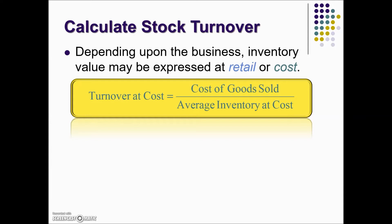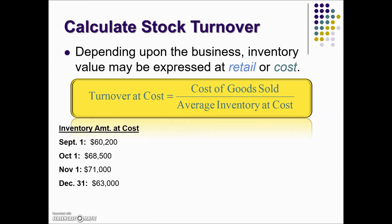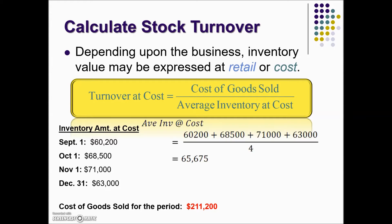So instead of looking at retail prices, we're looking at cost prices. Here we have four different dates where they determine the inventory on hand using the cost of the inventory. We're also given the cost of goods sold for the period — not the selling price, but the cost of the goods that were sold. Before we can find our turnover ratio, we need to find the average inventory at cost. We add up the four inventories and divide by four to get the average inventory cost — that value is in the denominator. To find our turnover ratio, we take the cost of goods sold during this period divided by the average inventory, giving us a turnover ratio of 3.22 — a little over three times the average inventory is turned over during this period of time.